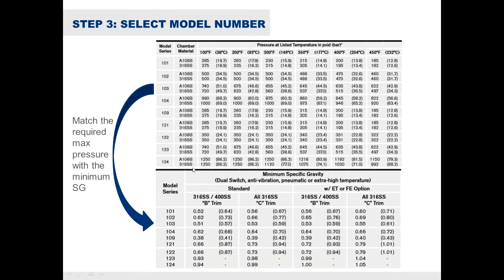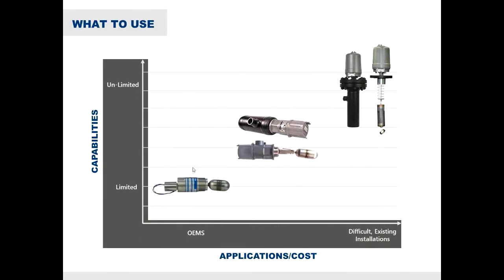There are other steps to selecting the full model number — you need to select materials of the chamber, the actual switching element, things like that. But this is the real basis for picking what model number is best for your application. We have a bunch of different options across the large level catalog, the 1710/2210, and the compact 1500 series level switches.